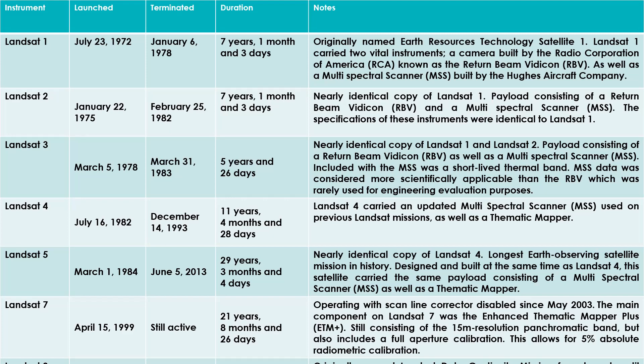Landsat 3 was launched on March 5, 1978, and terminated on March 31, 1983, serving five years and 26 days. Landsat 4 was launched on July 16, 1982, and terminated on December 14, 1993, serving 11 years, four months, and 28 days. Landsat 5 was launched on March 14, 1984, and terminated on June 5, 2013, serving 29 years, three months, and four days.